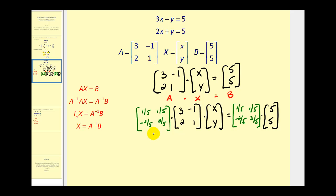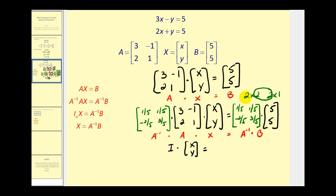What we've done here is multiplied both sides of the equation by A inverse. So now we have A inverse times A times matrix X must equal A inverse times matrix B. We know that A inverse times A would be the identity matrix, so this gives us the identity matrix times the variable matrix must equal this product. Let's determine this product. This is a 2 by 2 and this is a 2 by 1, so the result will be a 2 by 1. Row 1 times column 1: one-fifth times 5 is 1, plus one-fifth times 5 is 1 as well — 1 plus 1 gives us 2. Now row 2 times column 1: negative two-fifths times 5 is negative 2, plus three-fifths times 5 is 3, so negative 2 plus 3 equals positive 1.